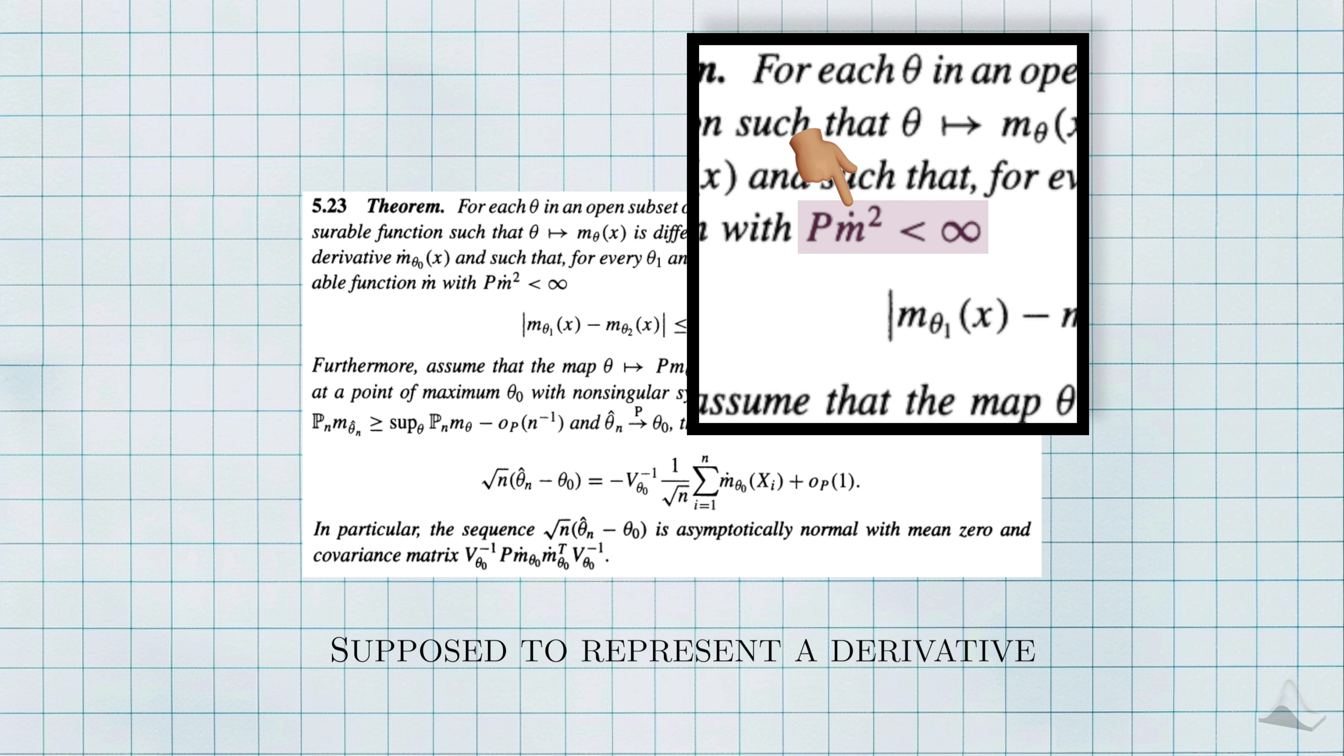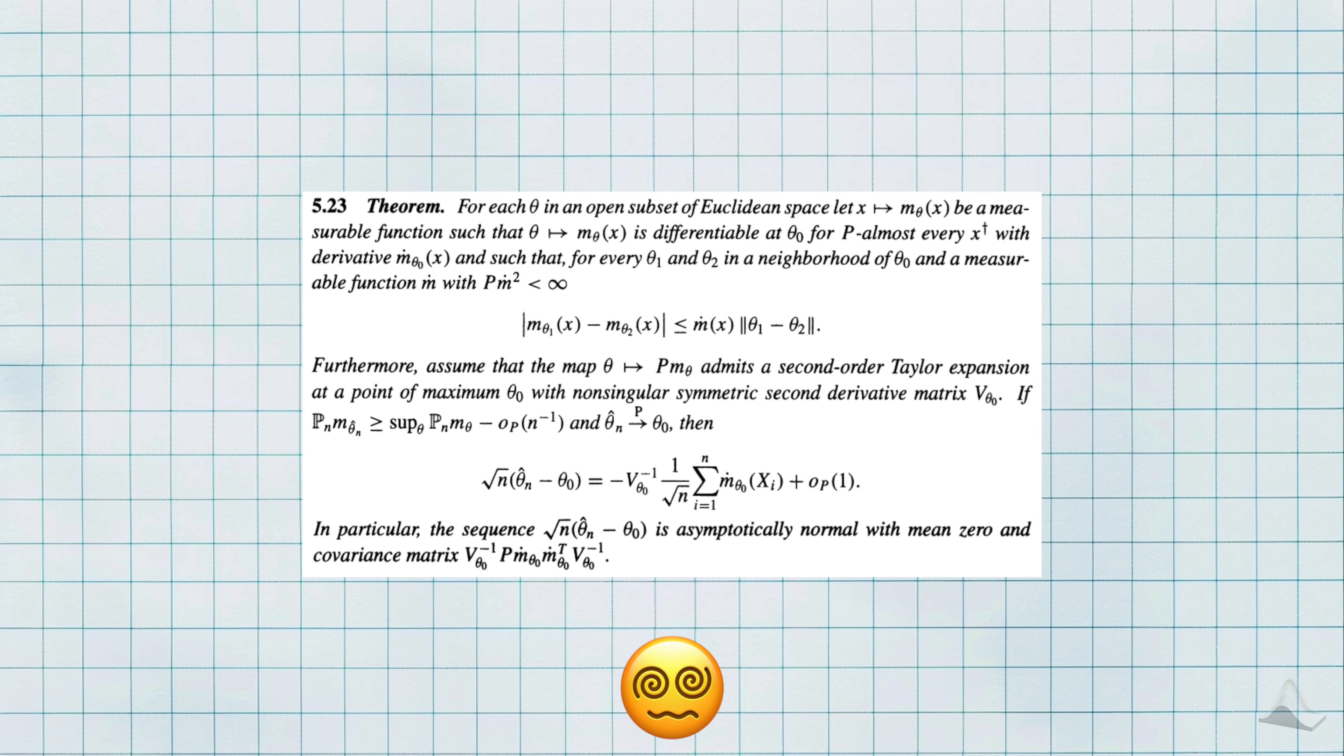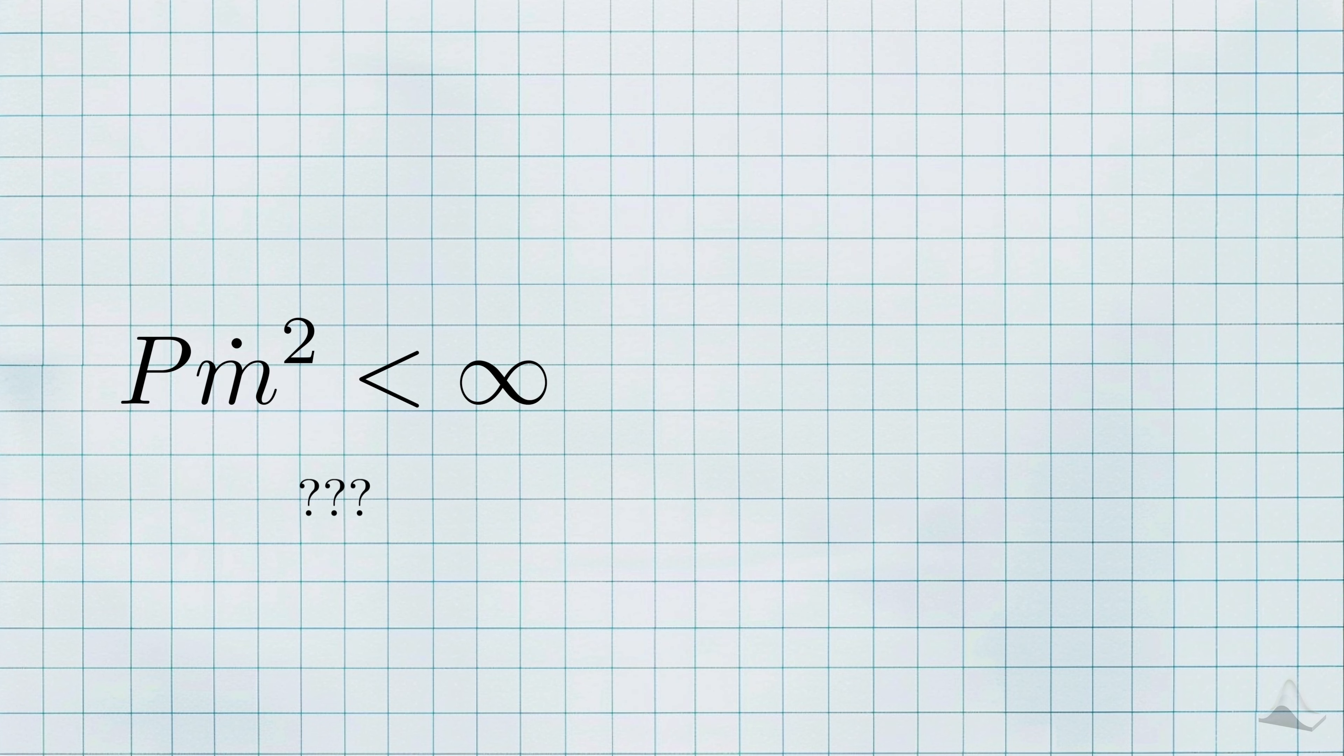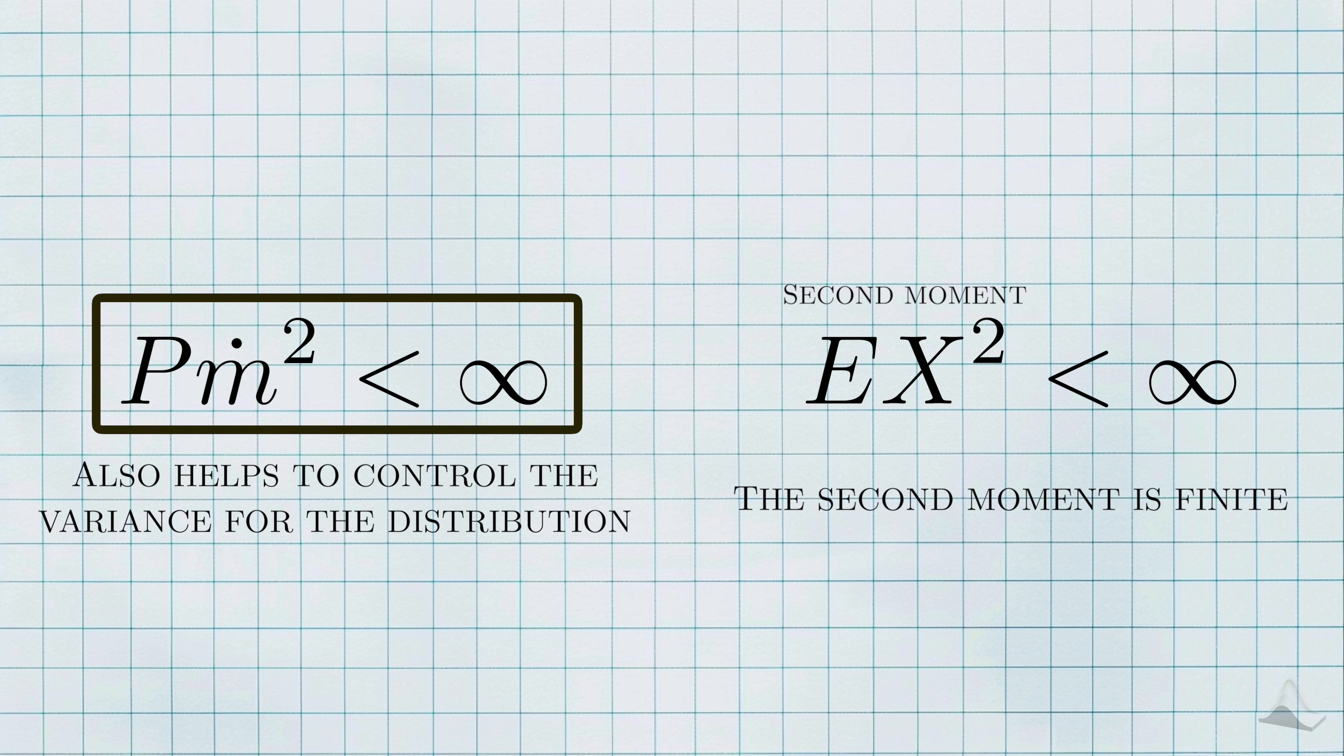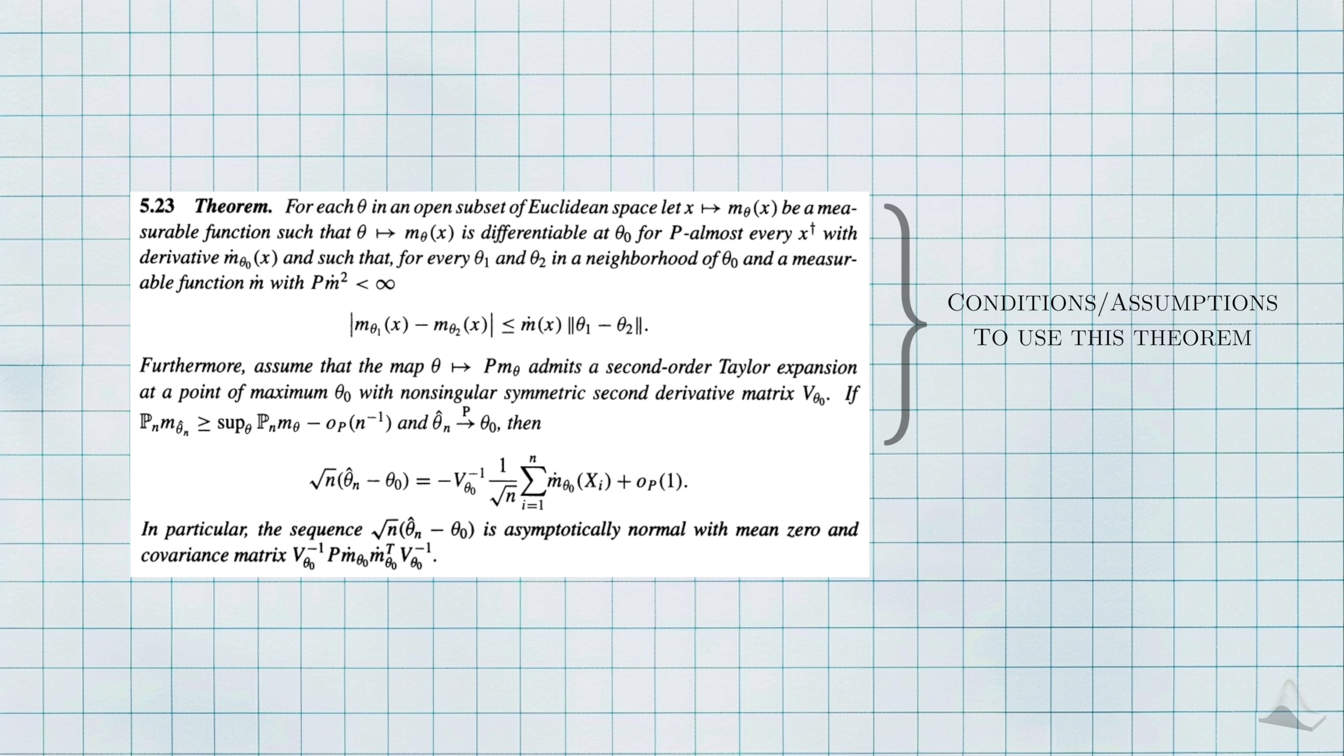One thing that bothered me for a while was this statement here. I knew that this P notation represented an expectation and that a dot over the function represented a derivative, but altogether, I had no idea what it meant. But one day, my professor rewrote it in a way that made it make a lot more sense. It turned out to be a similar assumption you see in the central limit theorem. In CLT, you assume the variance is finite. Another way to represent this idea is that the second moment, the expectation of x squared, is also finite. So this statement here is just needed to make sure that the variance didn't explode.